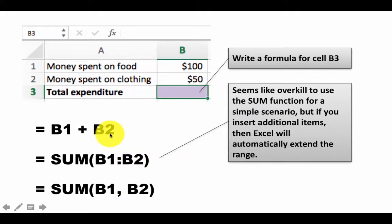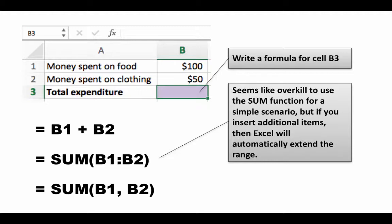=B1+B2 is perfectly correct, nothing to complain about. =SUM(B1:B2) — on the face of it, this looks like overkill, right? We've got only two items. Why not just add them with B1+B2?